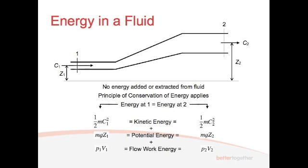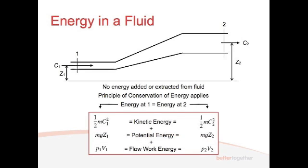And then lastly, we've got the flow work, p1v1 and p2v2, going in and out of the pipe. So this is a bit like the continuity type situation. And so you can put these together. You add them all up. Kinetic energy plus potential energy plus the flow work energy. And you end up with an equation that looks something like this.